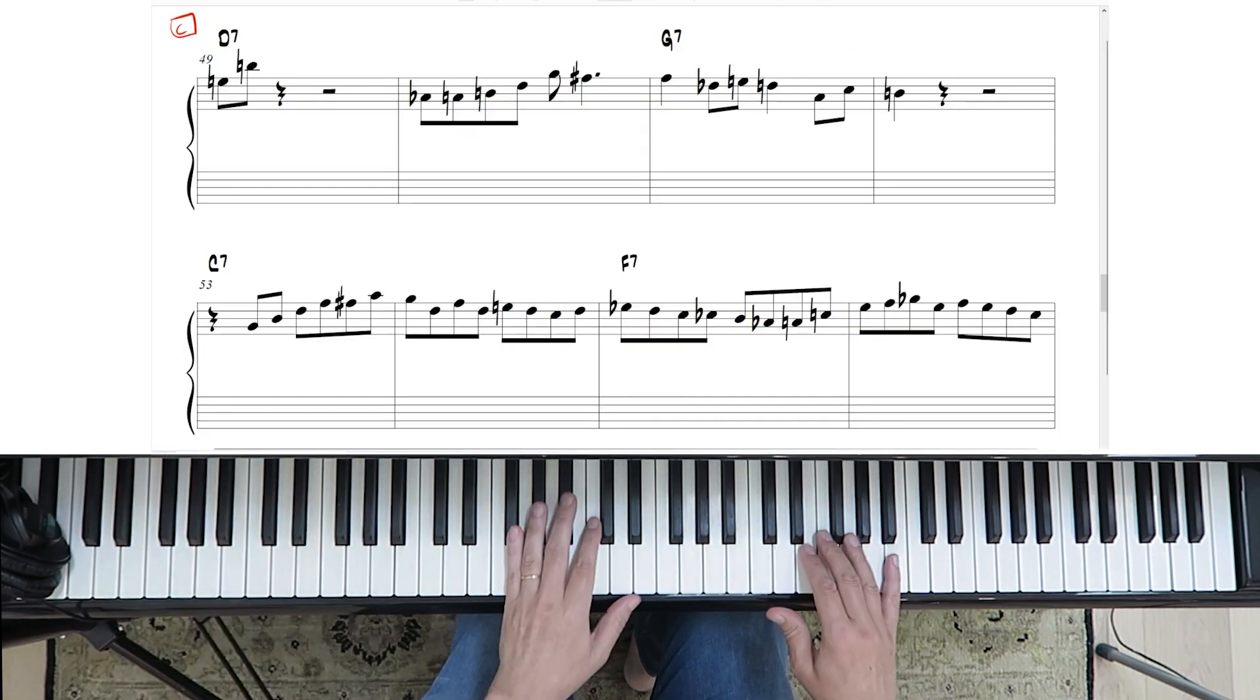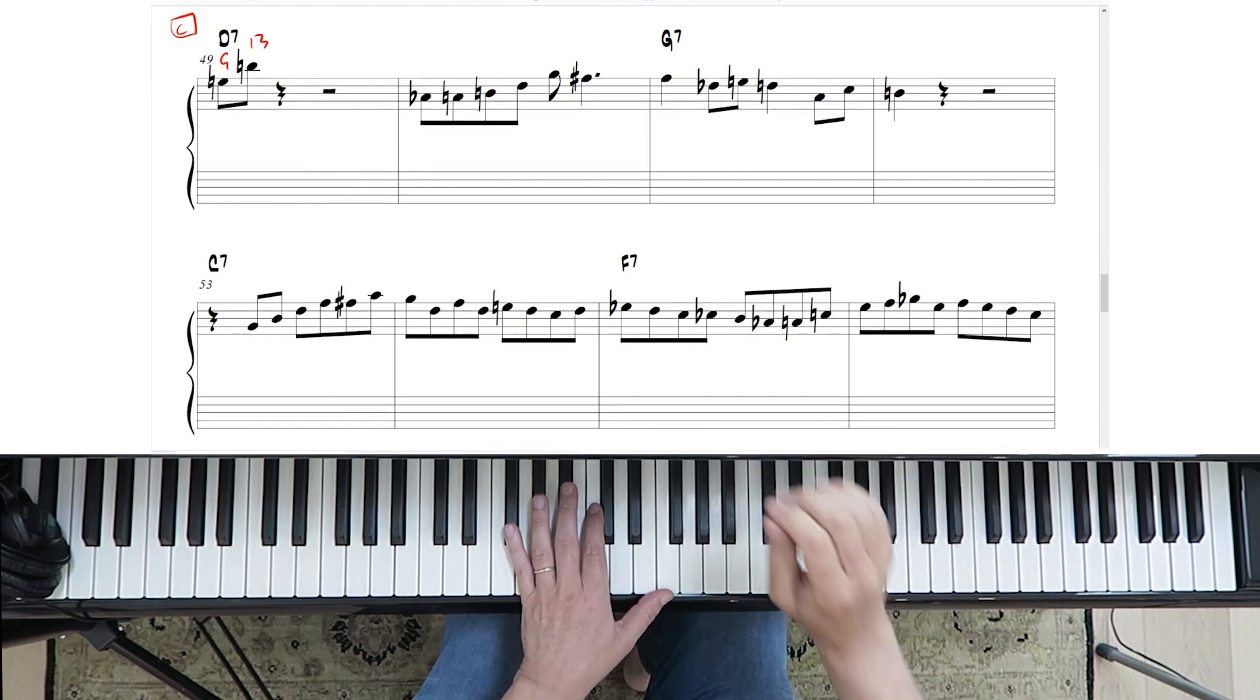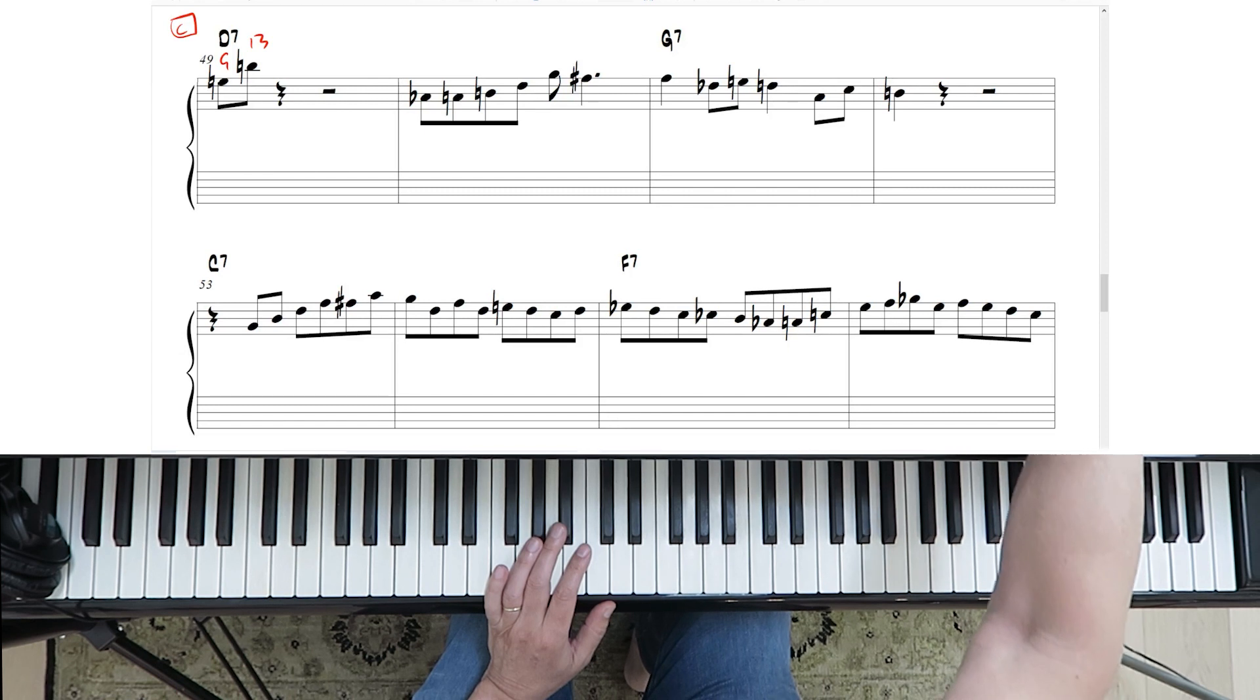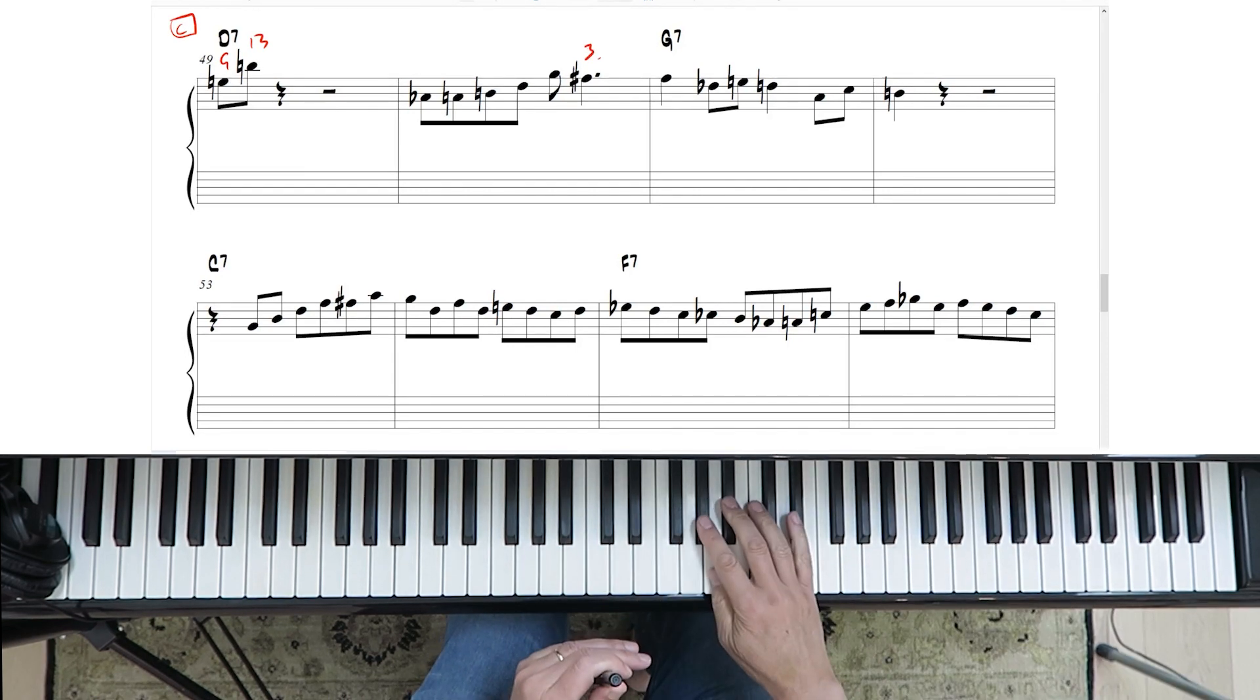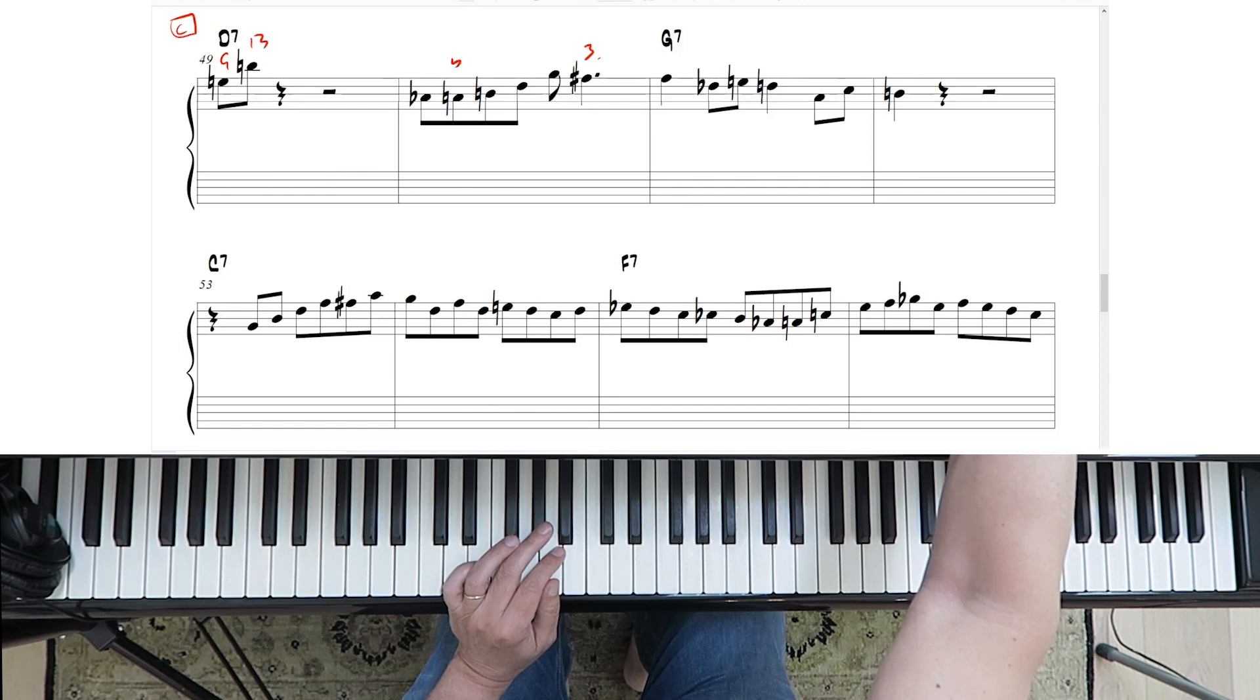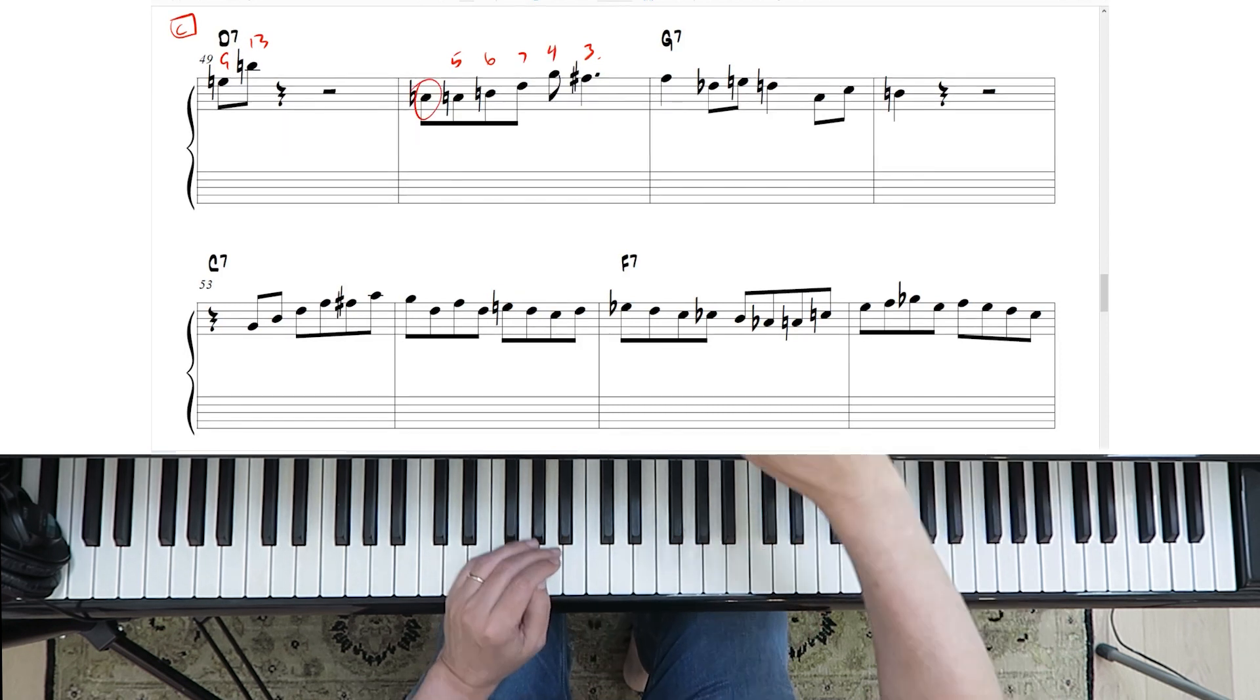I really like this because he's starting off with the 9th and the 13th of D7. Like bebop, right? And then, like I say, this is the 3rd of D7. It doesn't make too much sense other than this is the 5th, the 6th, the 7th, and the 4th, but this is a passing note heading in there.